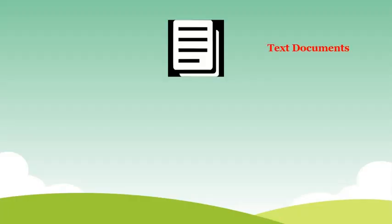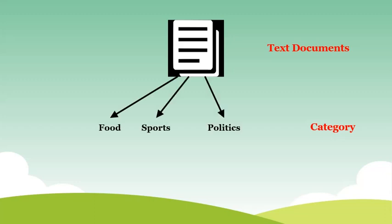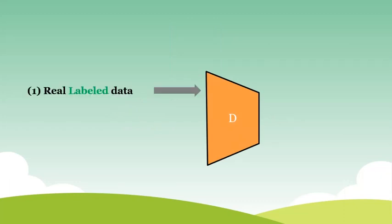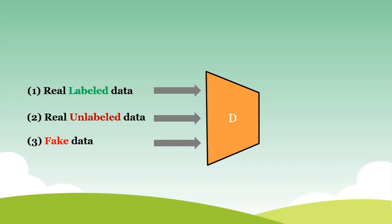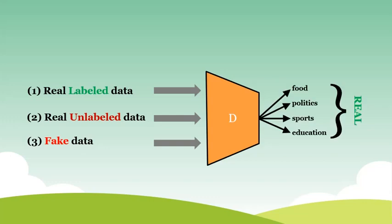Now let's look at an example of how it actually works. Consider a text classification task where the target task has four categories. The discriminator would take three kinds of inputs for making a prediction: first, the representation of real and labeled examples; second, the representation of real and unlabeled examples; and third, the representation of fake examples generated by the generator. It would then predict either one of the four target classes or the fake class.